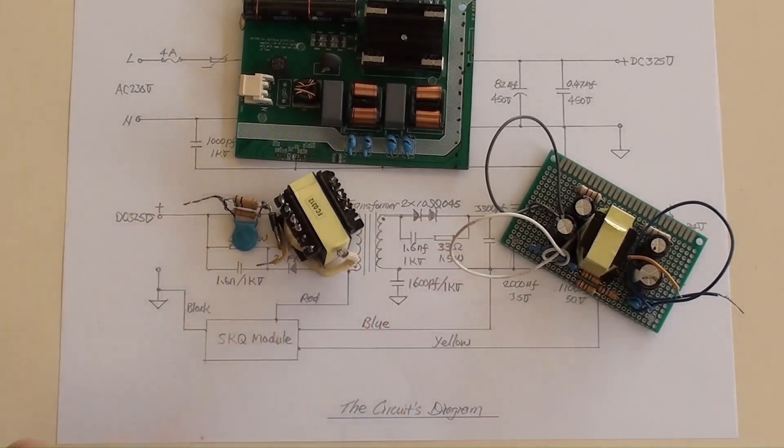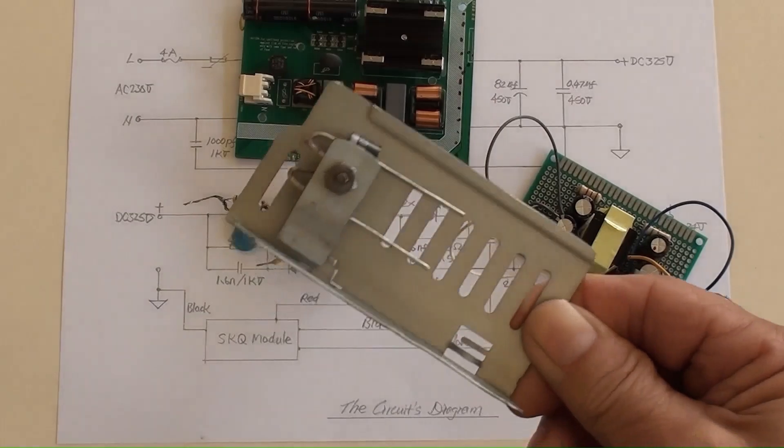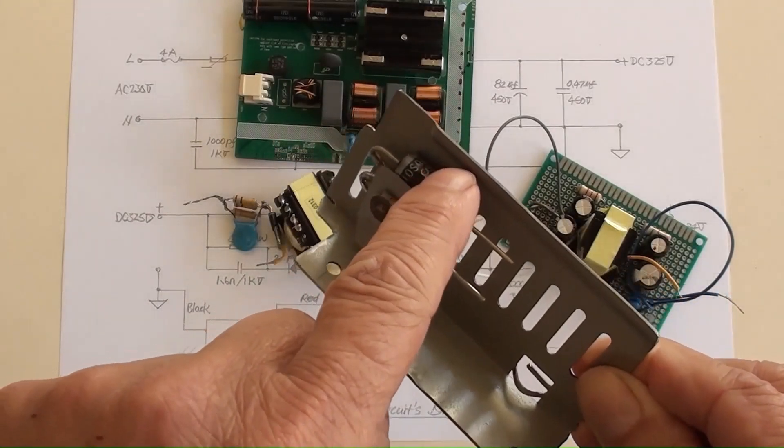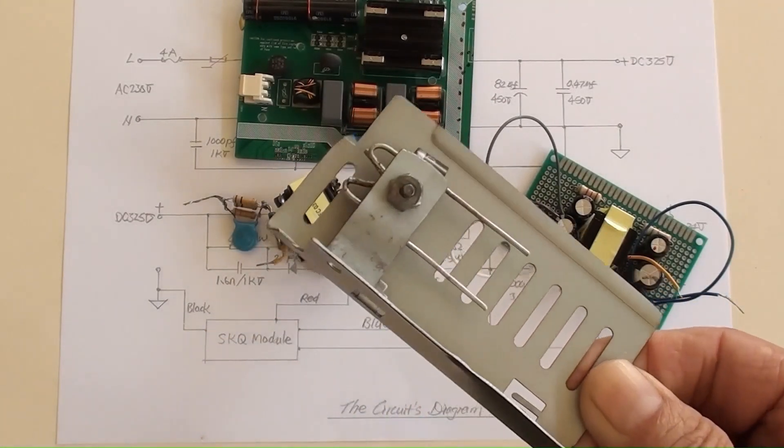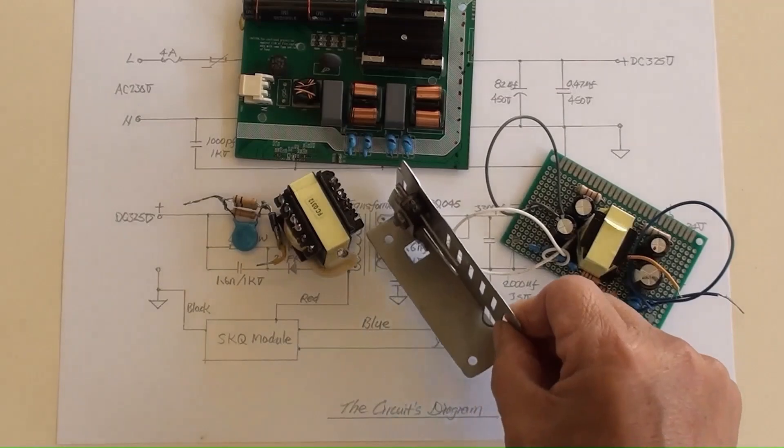Two Schottky diodes soldered together in series, and they have been bolted on a heat sink. This is anode and that is cathode terminal. Their maximum current is 10 amperes.